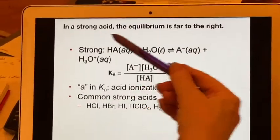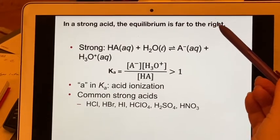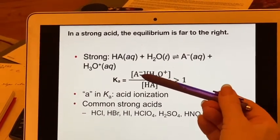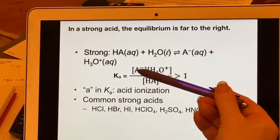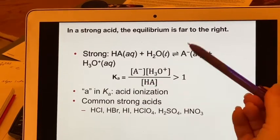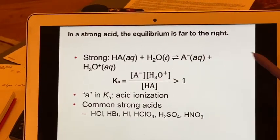So if you have a strong acid, your equilibrium is going to be way over to the right. Ka is greater than one. That means you have more products. These numbers are higher than the HA is. A lot of the HA fell apart. So a strong acid, it's well to the right.